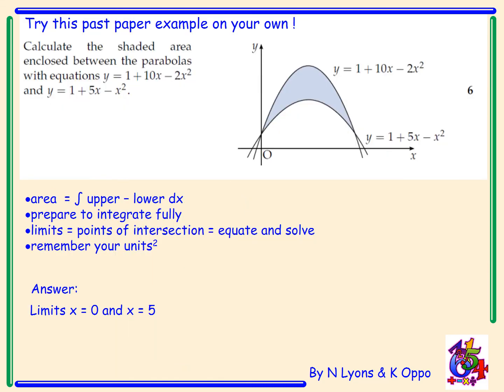Right, try this past paper example on your own. It says calculate the shaded area enclosed by the parabolas with equations y equals 1 plus 10x minus 2x squared and y equals 1 plus 5x minus x squared. Now look at the graph to make sure you understand which one's the top one, which one's the bottom one.